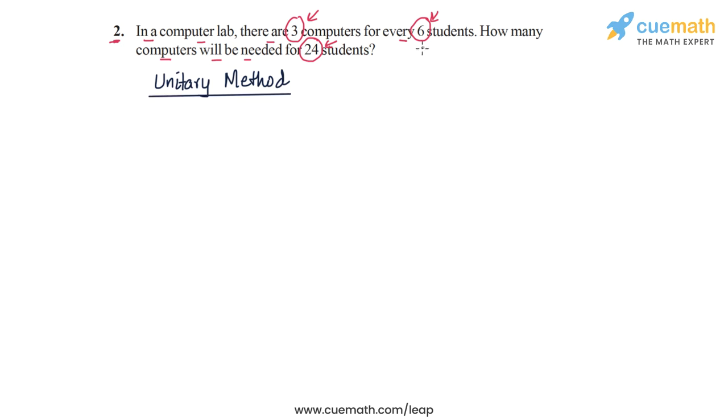To apply the unitary method, we note that 6 students need 3 computers. So we can write this as: 6 students need 3 computers. So this means that 1 student needs on an average 3 by 6 or half a computer.